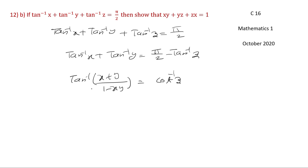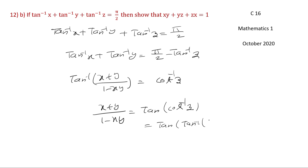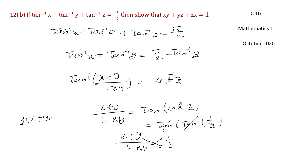If tan inverse x plus tan inverse y plus tan inverse z equals pi by 2, show that xy plus yz plus zx equals 1. We write tan inverse x plus tan inverse y equals pi by 2 minus tan inverse z. Applying tan inverse of (x plus y) by (1 minus xy) equals cot inverse z equals tan inverse (1 by z). Cross-multiplying: z(x plus y) equals 1 minus xy, giving xz plus yz equals 1 minus xy, therefore xy plus yz plus zx equals 1.